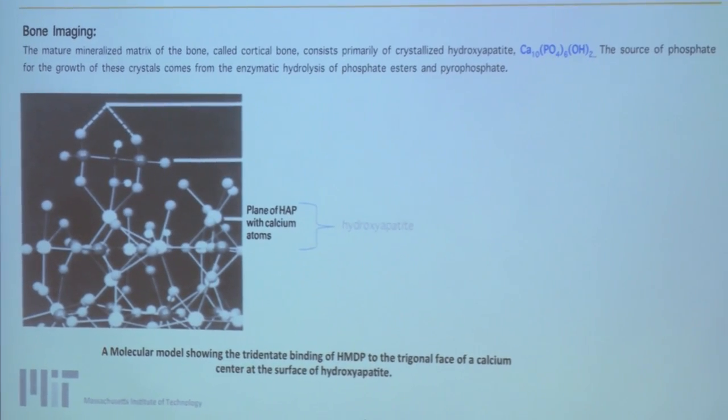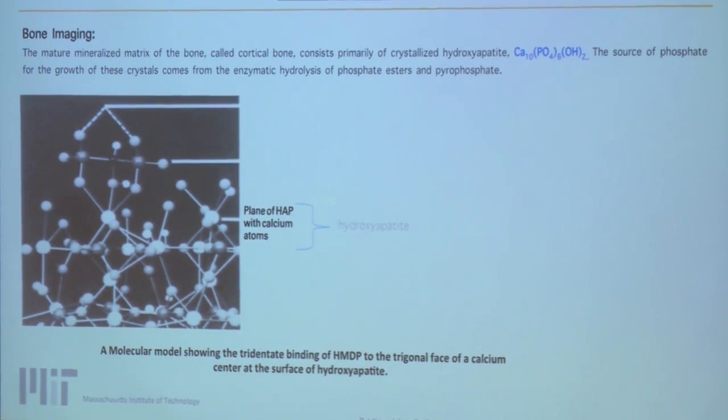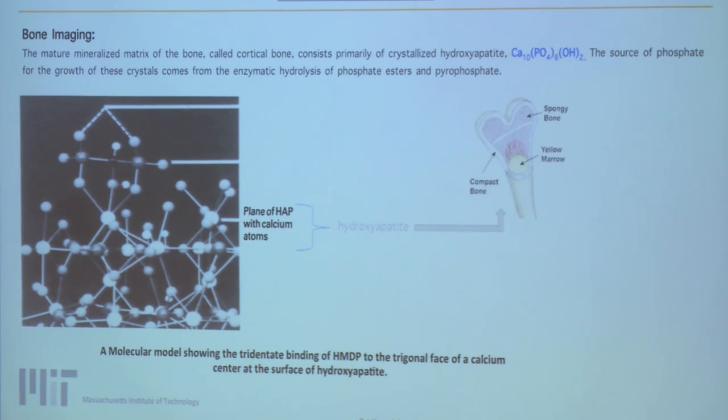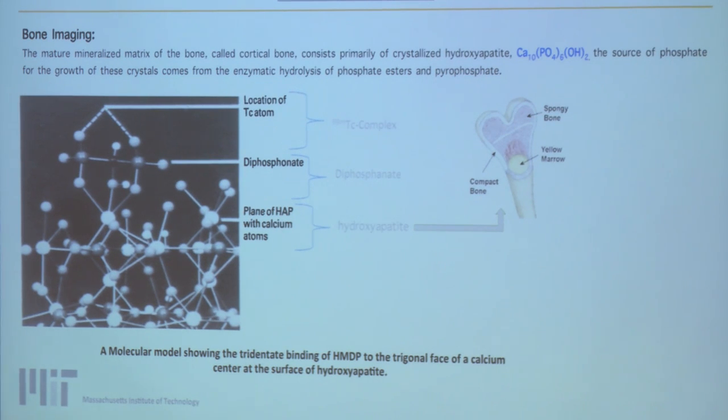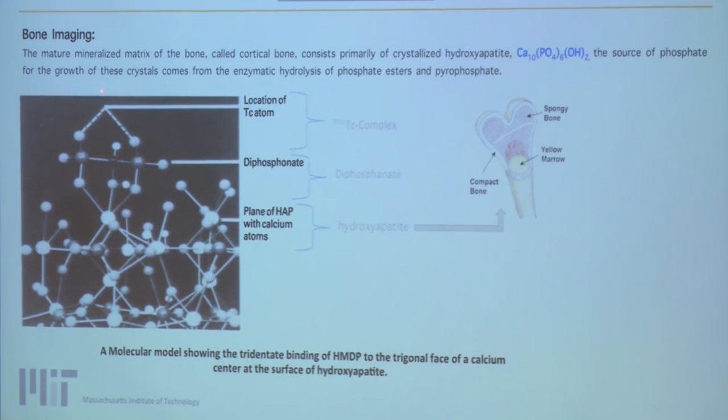It's believed that technetium-99M phosphate complexes could be an imaging bone. It's believed that the mineralized matrix of the bone is called cortical bone, and the function consists of the crystalline of the hydroxyapatite. The source of the growth of these phosphates comes from the hydrolysis of the phosphates by the enzymatic in vivo. We inject the technetium-99M. We can see the mud in the middle. The calcium are phased to the technetium.